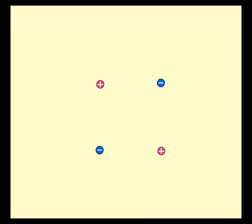Here are four charges, two positive and two negative, in a square configuration and we're going to draw the electric field.